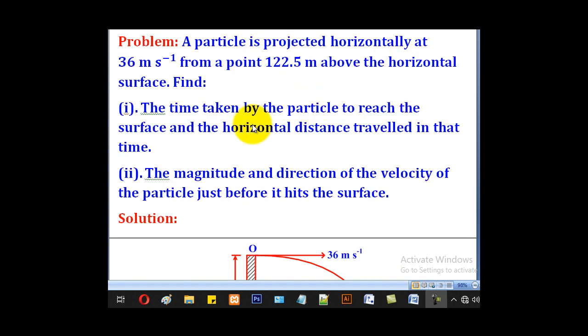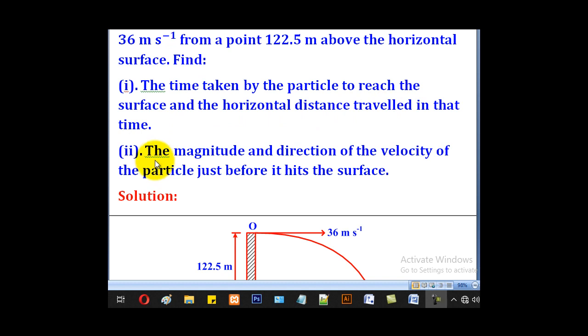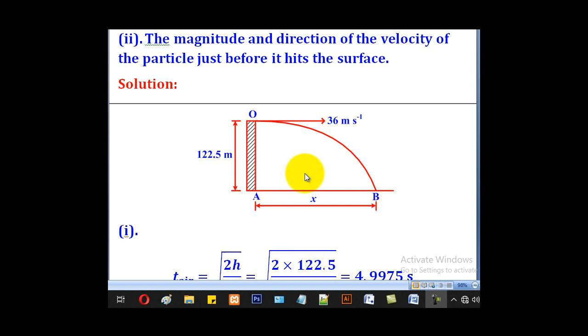We shall use the above equations to solve this problem. A particle is projected horizontally at 36 meters per second from a point 122.5 meters above the horizontal surface. Find: (i) the time taken by the particle to reach the surface and the horizontal distance traveled in that time. (ii) the magnitude and direction of the velocity of the particle just before it hits the surface.